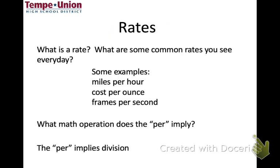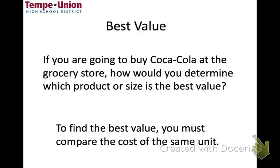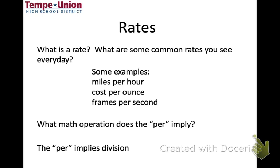When we're talking about rates, we're saying things like miles per hour, cost per ounce, frames per second. The 'per' usually is talking about some type of division — so frames divided by seconds, cost divided by ounces, etc.